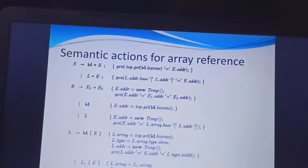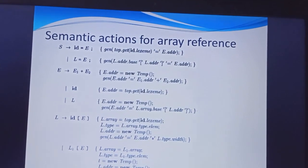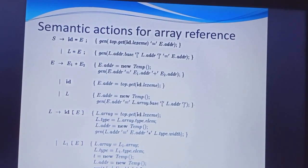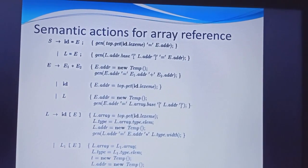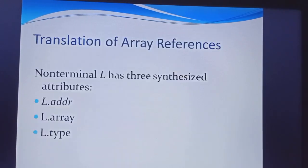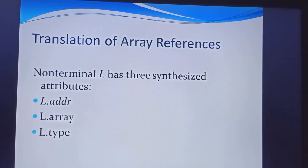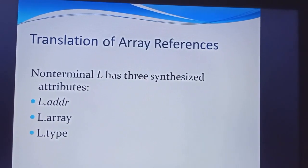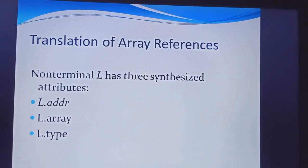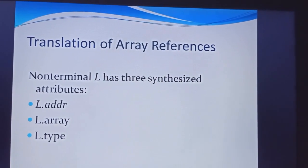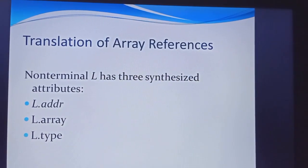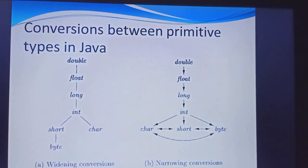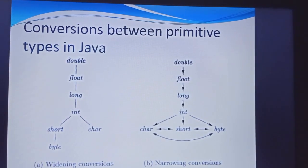This is the semantic action for array reference. Same as the translation of schemas, we represent the semantic meaning here. Next is the translation of array references, where we have three synthesized attributes: the l address value, the array addressing value, and the type value.